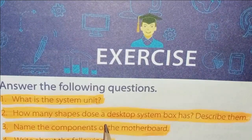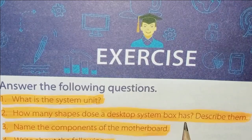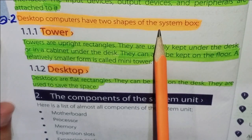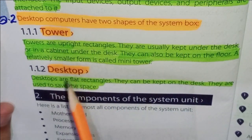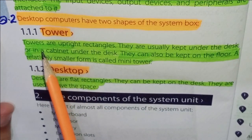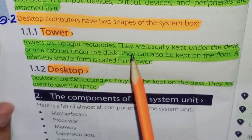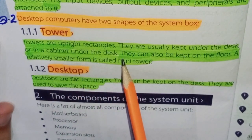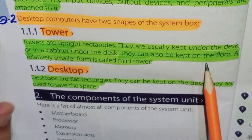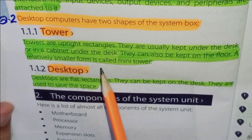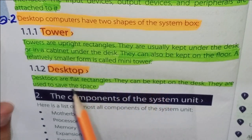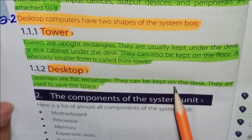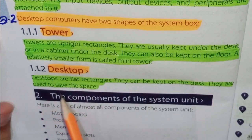Question No. 2: How many shapes does a Desktop System Box have? Describe them. Desktop Computers have two shapes of the System Box: No. 1 Tower, No. 2 Desktop. Towers are upright rectangles, usually kept under the desk or in a cabinet. They can also be kept on the floor. A relatively smaller form is called Mini Tower. Desktops are flat rectangles that can be kept on the desk and are used to save space.